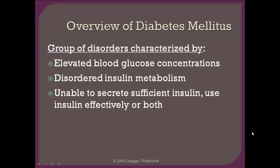Diabetes is characterized by a group of disorders: first and foremost elevated blood glucose, disordered insulin metabolism — and we'll talk at length about what that word 'disordered' means because it's not always the same issue depending upon where a person is in their diabetes progression — and lastly, inability to secrete sufficient insulin, which happens once a person has full-blown diabetes.